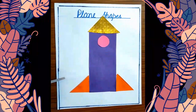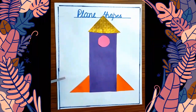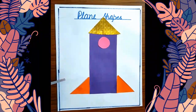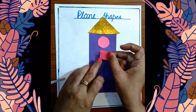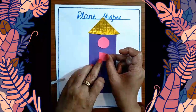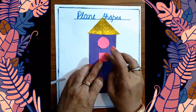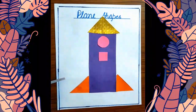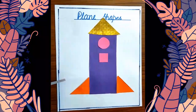Now, this is a circle — for the face. Now this is a square — all four sides of a square are equal. And this is an oval.